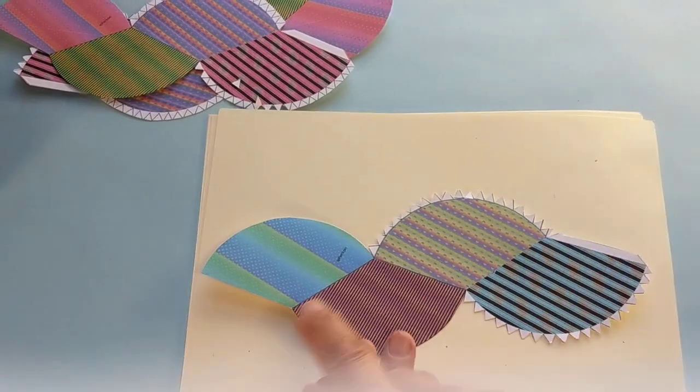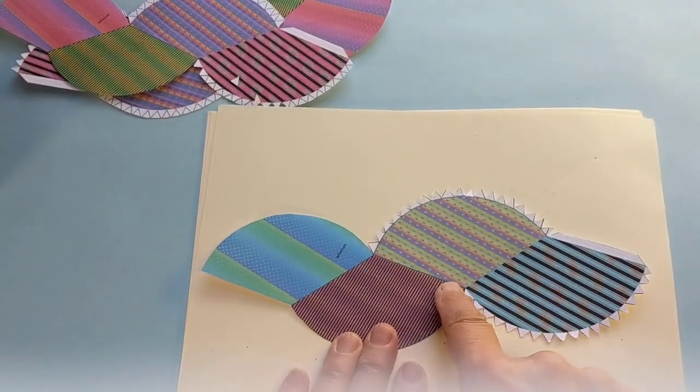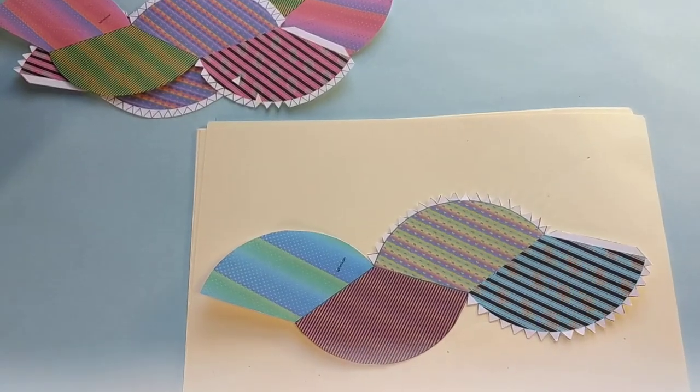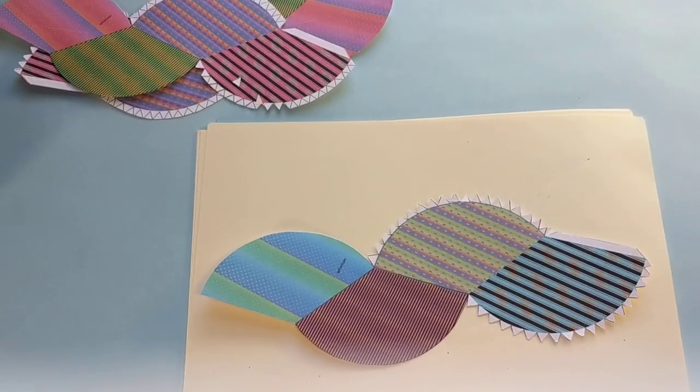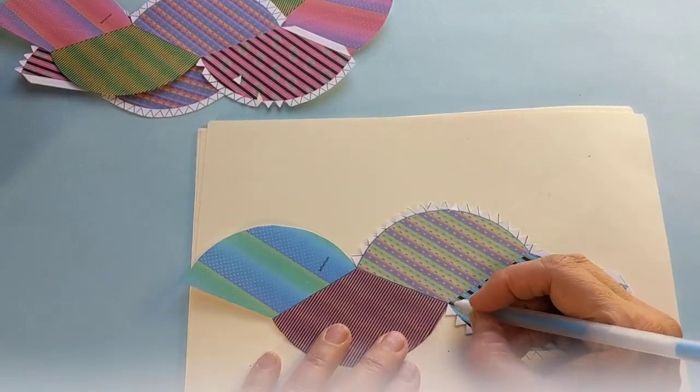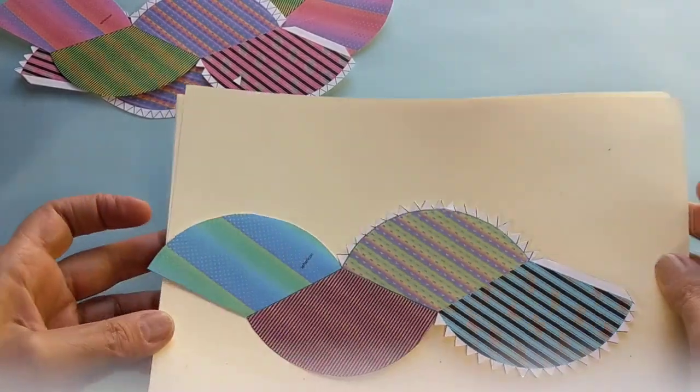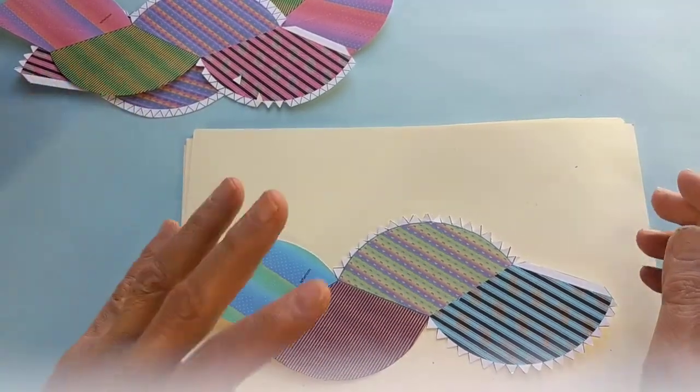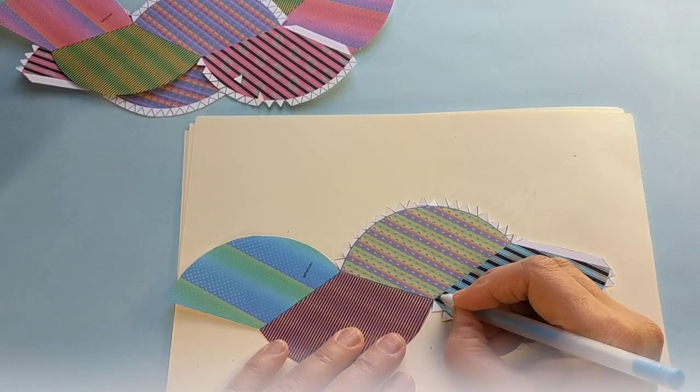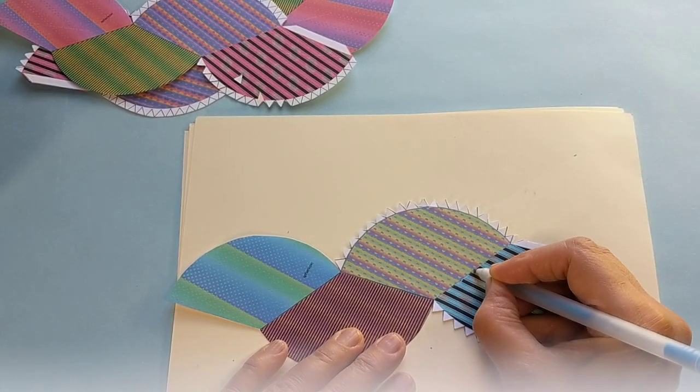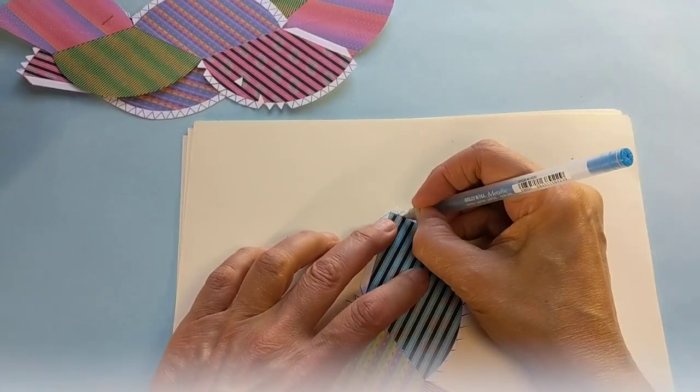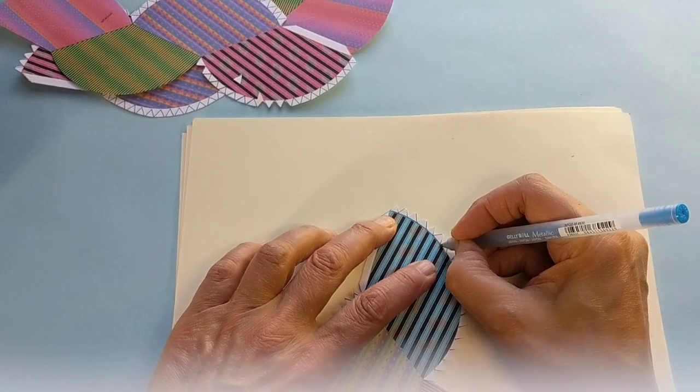So now what you want to do is make score lines where the lines are and right here on the curves there's going to be folds there. Score lines basically are lines that are pressed into the paper. So I put something kind of cushy underneath it like newspaper or catalog, and I press hard so I make this pushed in line.